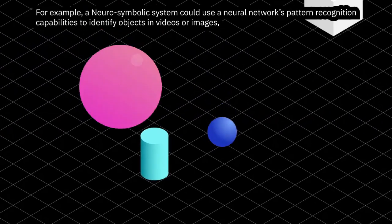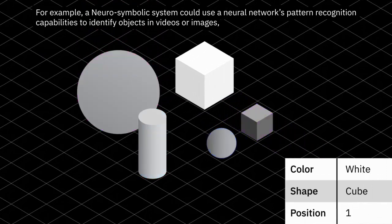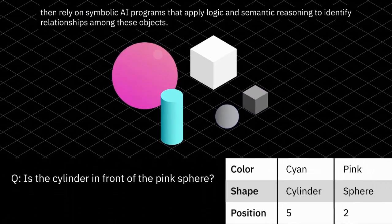For example, a neurosymbolic system could use a neural network's pattern recognition capabilities to identify objects in videos or images, then rely on symbolic AI programs that apply logic and semantic reasoning to identify relationships among these objects.